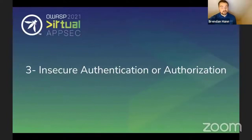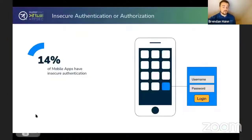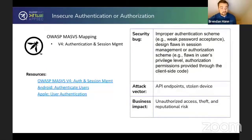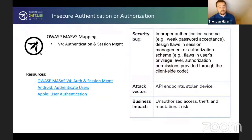The third area of focus from the eight domains of the MASVS is insecure authentication or authorization. Here's some good news: only 14% of mobile apps have insecure authentication. So if you're looking for an area to focus less on, this is it. Insecure authentication schemes are still dangerous — they can allow for unauthorized access or theft — but statistically, insecure authentication seems relatively under control.